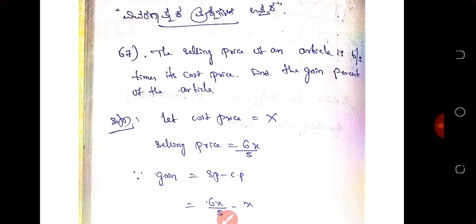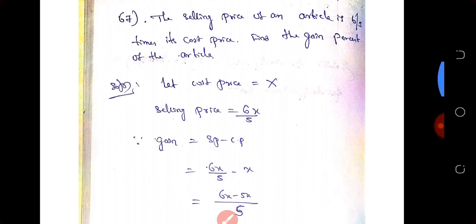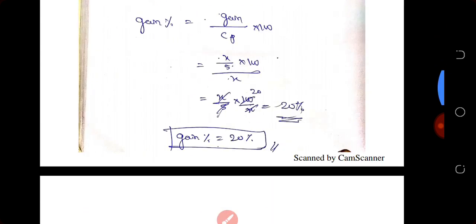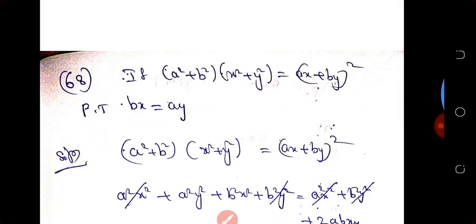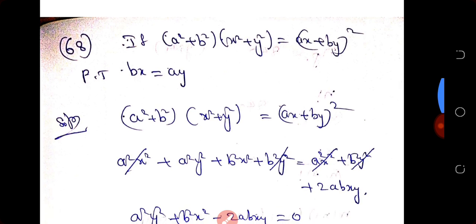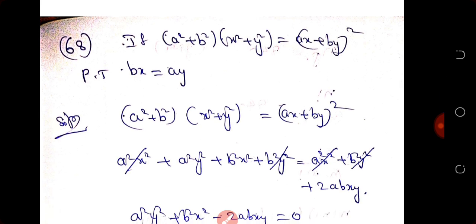Next question: if (a² + b²)(x² + y²) equals (ax + by) whole square, prove that bx equals ay.